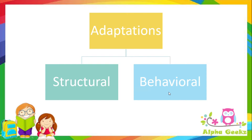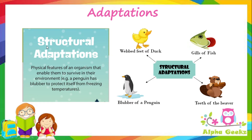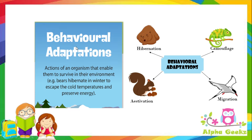Adaptations or features could be of two types: structural or behavioral. Structural adaptations are physical features of an organism that enable them to survive in their environment. Examples include: a penguin has blubber to protect itself from freezing temperatures; the webbed feet of a duck help it to swim in water; gills of a fish are its main respiratory organ; and teeth of a beaver help it to chew its food easily.